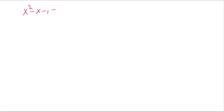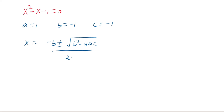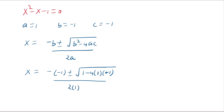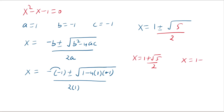So x squared minus x minus 1 equals 0. This is a quadratic equation. Using the quadratic formula with a equals 1, b equals minus 1, c equals minus 1: x equals minus b plus or minus square root of b squared minus 4ac, divided by 2a. Substituting: x equals 1 plus or minus square root of 1 plus 4 over 2, giving x equals 1 plus square root of 5 over 2, or x equals 1 minus square root of 5 over 2. The second value is negative, and since x must be positive, it is rejected. Our solution is x equals 1 plus square root of 5 over 2.